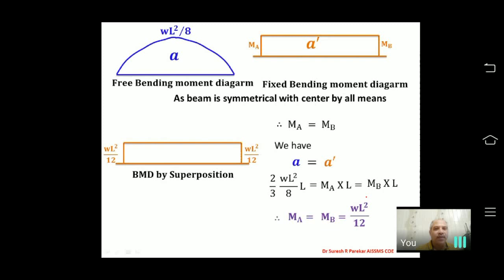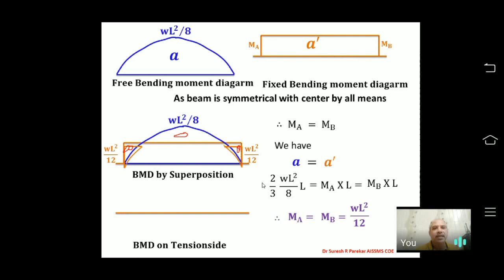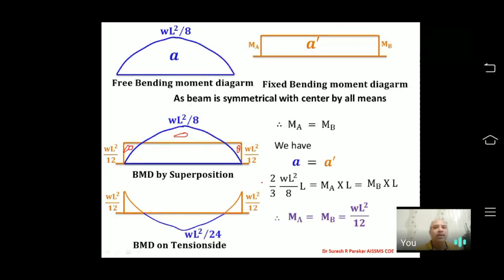With MA = MB = wL²/12, we superimpose the free and fixed BMDs. The uncommon portions — two triangles at the ends and a parabolic central portion — are plotted on the tension side. The central value of the final BMD is wL²/24.